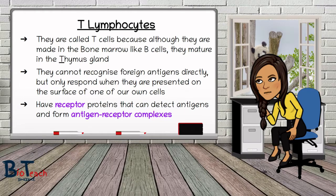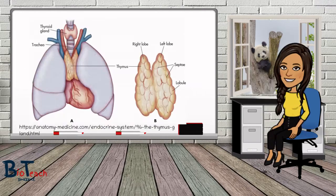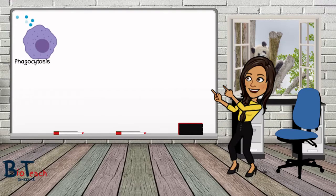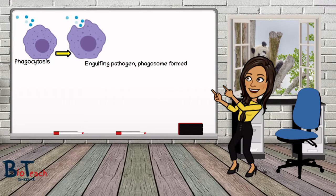I'll show you this shortly in a diagrammatical format. This image here shows the location of the thymus gland — it's located in our chest cavity just above the heart and slightly behind the lungs. When we look at cell-mediated immunity we're primarily talking about the action of T-cells, but before a T-cell becomes activated the process of phagocytosis needs to take place.